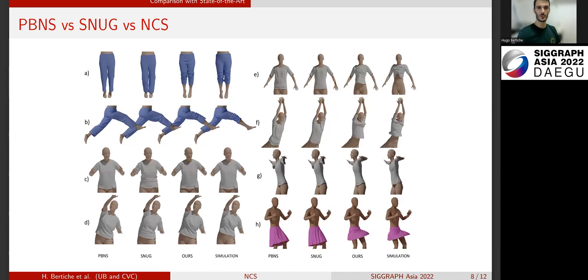Here, we show a comparison against other unsupervised deep learning solutions and also against classical simulation. As you can observe, our solution is the only one that shows cloth dynamics and it is comparable to the results obtained by simulation.